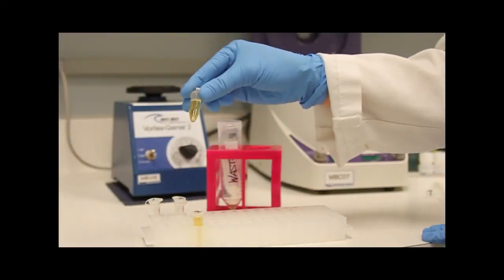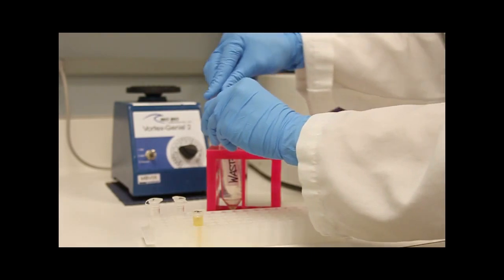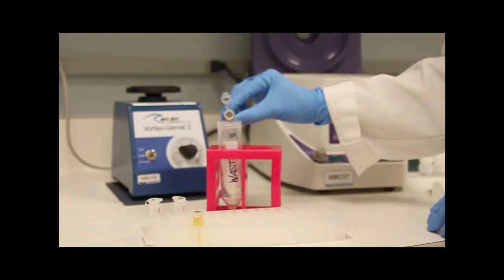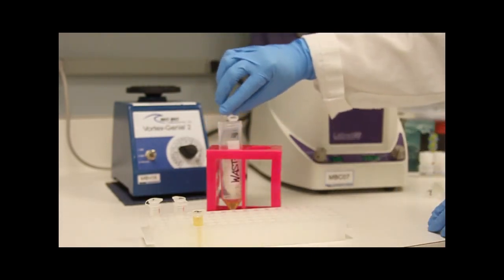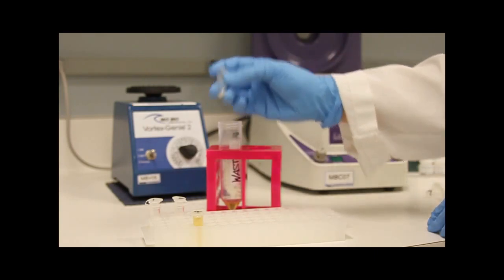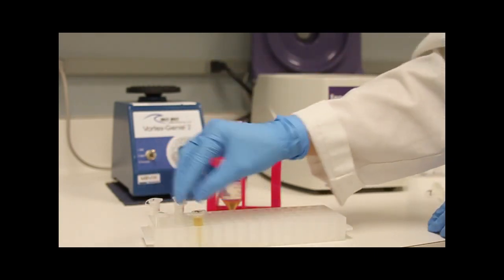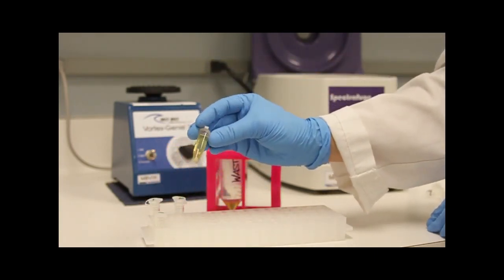Decant the supernatant by inverting the tube and pouring into a waste container. If you are using the 6-Minute Kit, continue with the next step of the protocol. If you are using the Standard Kit, add up to 2 mLs of the remaining culture to the pellet and repeat the steps of centrifugation and decanting.